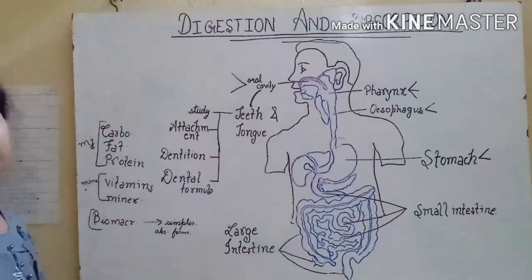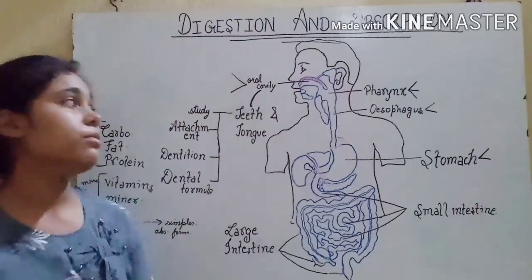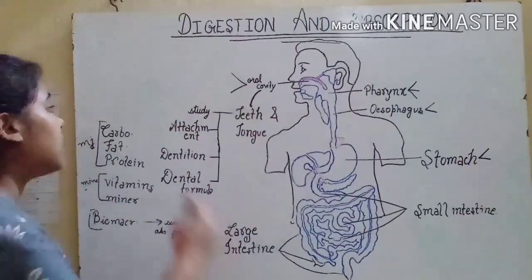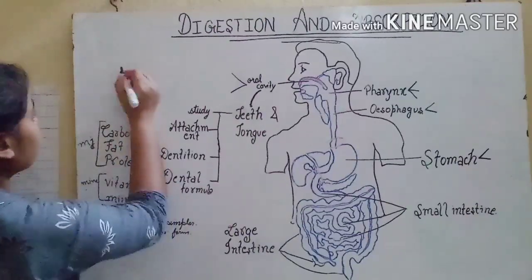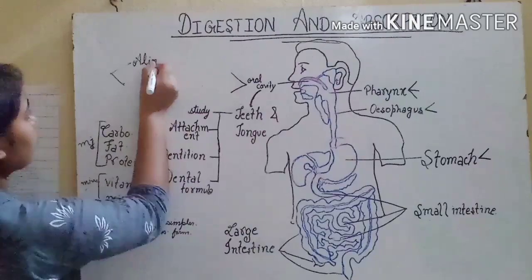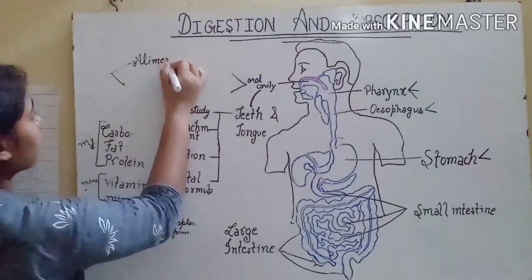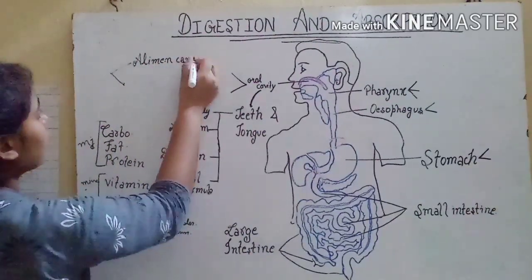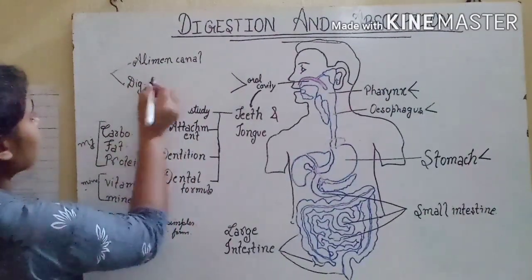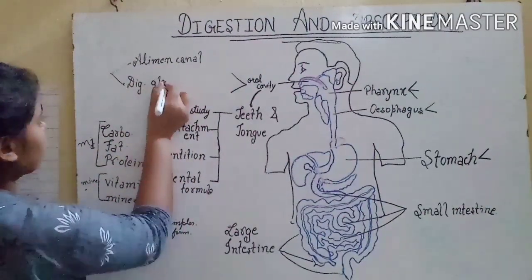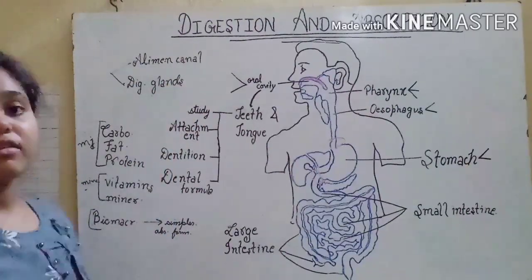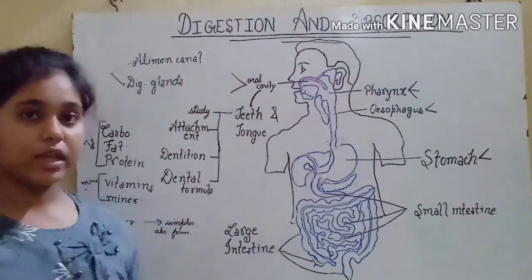So digestion occurs in our digestive system. The digestive system consists of two parts: the alimentary canal and the digestive glands. In this video, we will mainly focus on the alimentary canal.